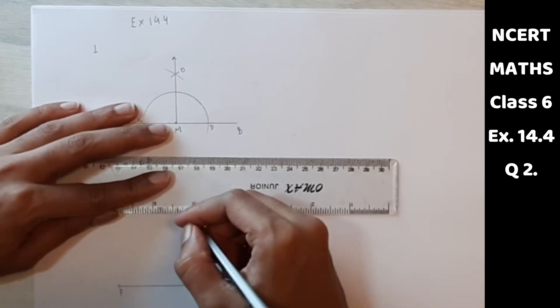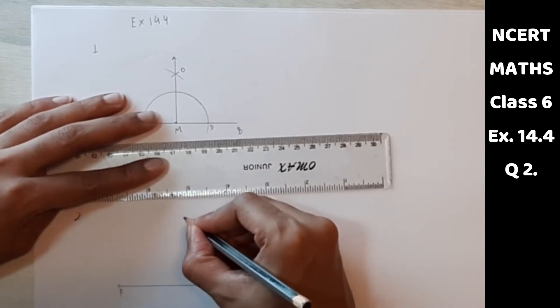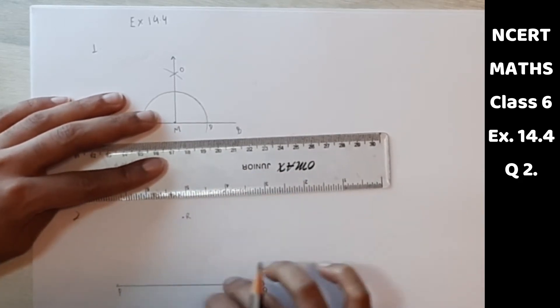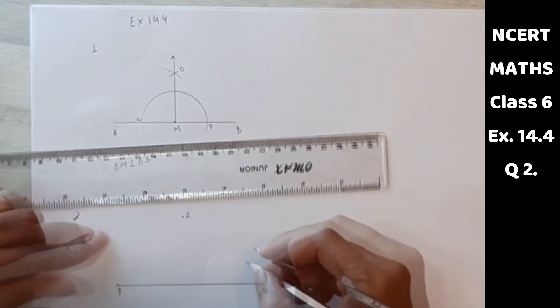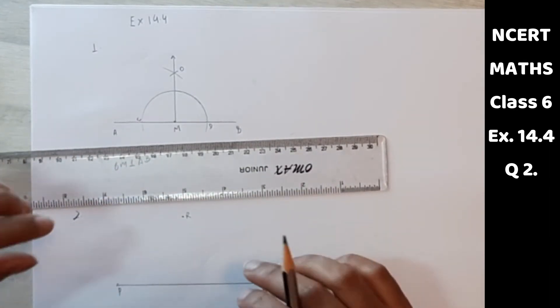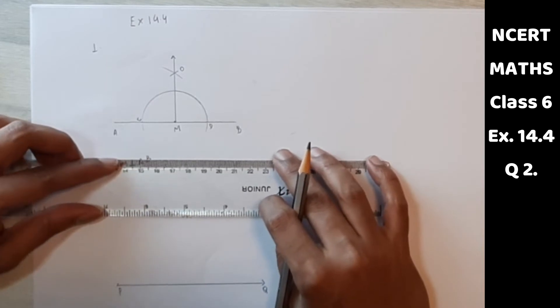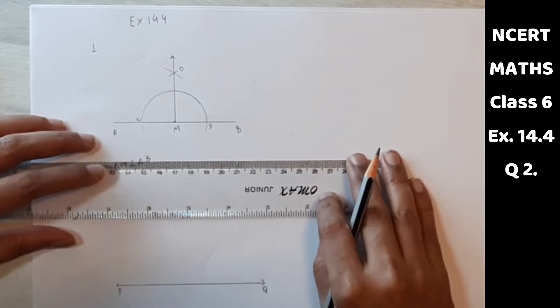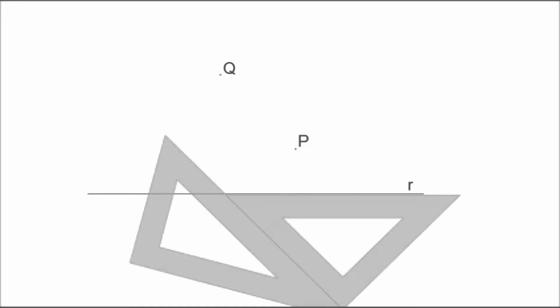Now a point R which should not be on PQ. Now we have to draw a line which should be perpendicular to PQ with the help of a set square. So now with the help of a set square, you have to hold the ruler, slide the set square along the ruler till point R touches the arm of the set square.